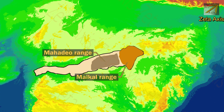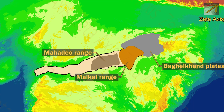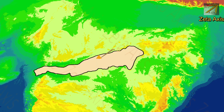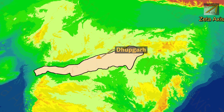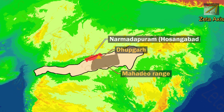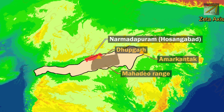On the east of the Maikal range lies the Baghhelkhand Plateau and Chhota Nagpur Plateau. Mount Dhupgarh is the tallest peak of the entire Satpura range and it is located in Mahadeo hills in Hoshangabad district of Madhya Pradesh. Amarkantak is also an important peak of the Satpura range.